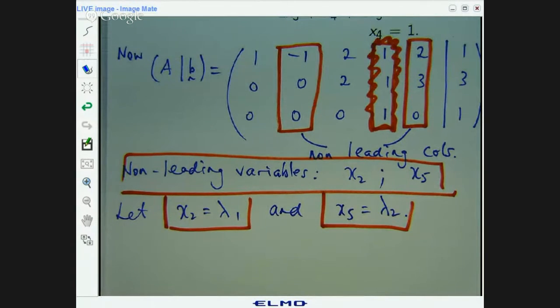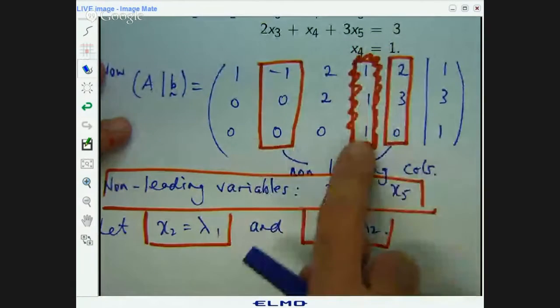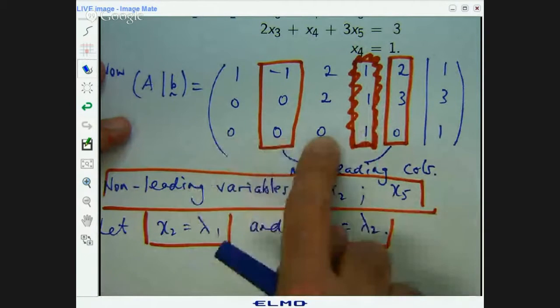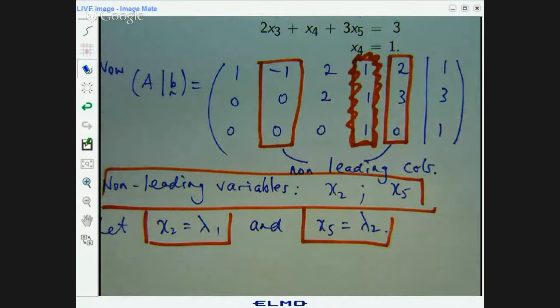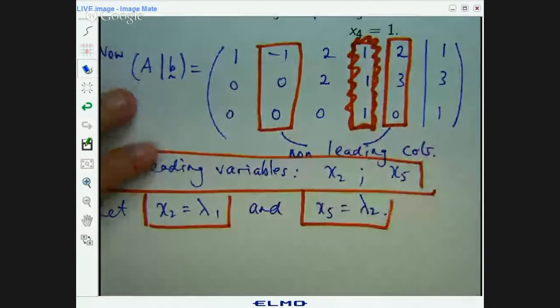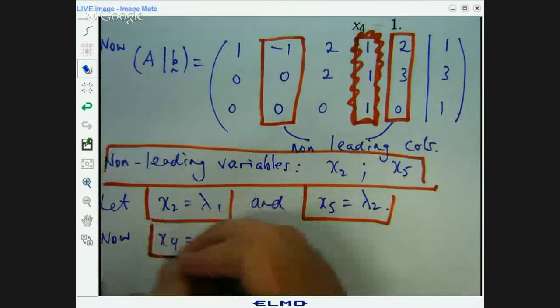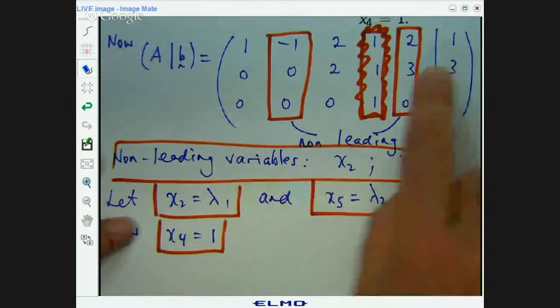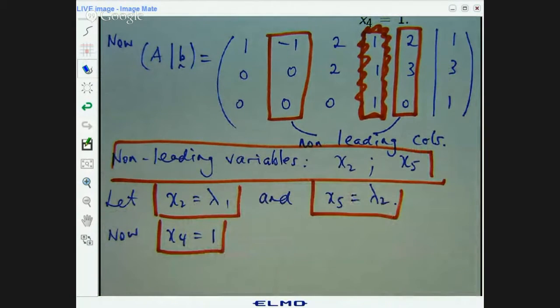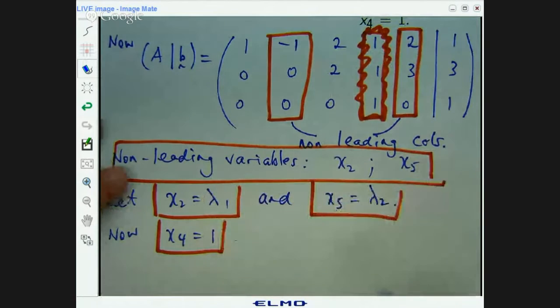All right, so what can we read off immediately from our matrix? Well, we know it from up here. We've got 0x1 plus 0x2 plus 0x3 plus 1x4 plus 0x5 equals 1. So x4 equals 1. So we go to the bottom row and we find out something. Now what we're going to do is use this information to go up a row and we substitute these things in here and we'll get x3 in terms of lambda 1 and lambda 2.